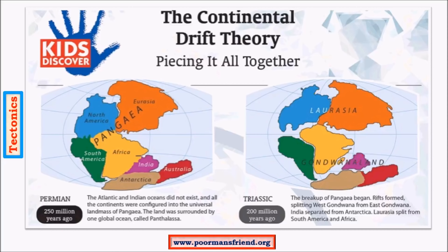The drift started about 200 million years ago in the early Mesozoic era. The breakup of Pangaea began with rifts forming between continents. Australia was still attached to Antarctica in the initial parts, but India had already started breaking up around 200 million years ago. Madagascar separated from Africa. South America and North America moved westwards, whereas Africa, India, and Australia moved northwards. Eurasia also drifted northwards by a few thousand kilometers.